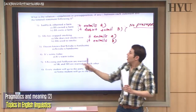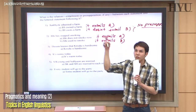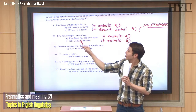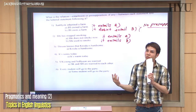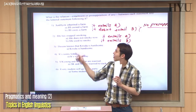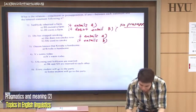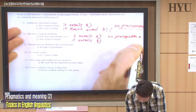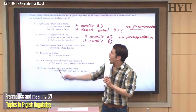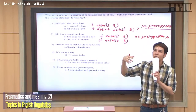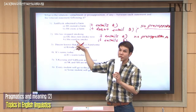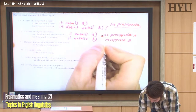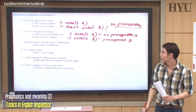For presupposition: 'Has Ji Hyuk stopped smoking?' — does she not smoke now? No, that's not certain. So no presupposition for A. But does it presuppose that she smoked before? Yes — even when you question it, 'Has Ji Hyuk stopped smoking?' presupposes she smoked before. So B is presupposed.